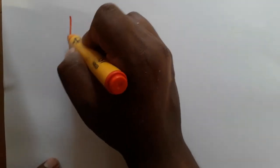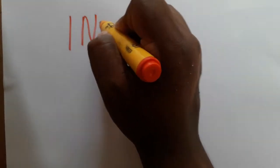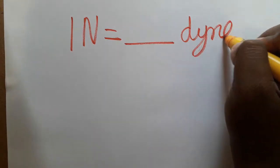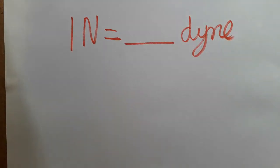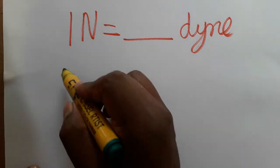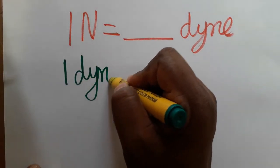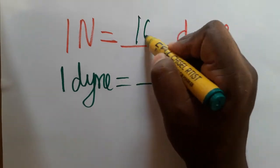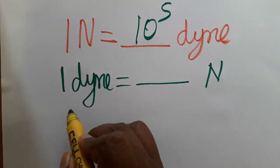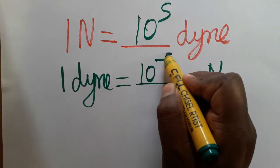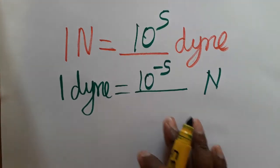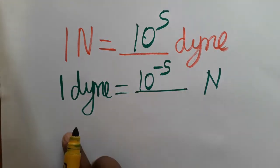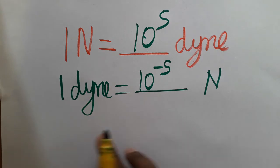In this video we are going to learn: 1 newton is equal to how many dyne, and also 1 dyne is equal to how many newton. 1 newton is 10 to the power 5 dyne, and 1 dyne is 10 to the power minus 5 newton. Today we are going to learn how these conversions work.